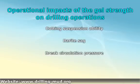Third, break circulation pressure. If you have a highly progressive gel strength fluid, there will be a lot of pressure required to break circulation. Once high pumping pressure is applied, it could lead to breaking the formation and result in a lost circulation issue.